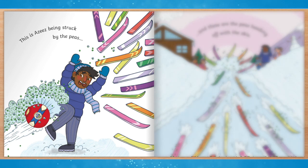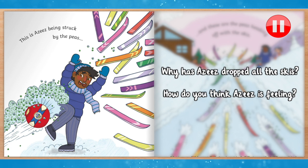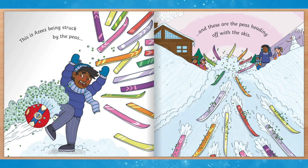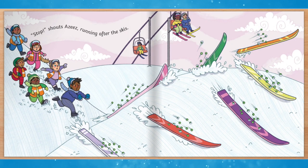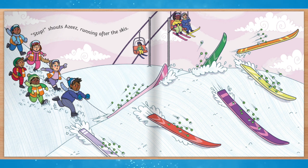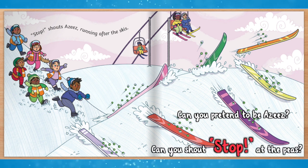This is Aziz being struck by the peas. Why has Aziz dropped all the skis? How do you think Aziz is feeling? How do you think the peas will go next? Stop! Shouts Aziz running after the skis. Can you pretend to be Aziz and shout stop at the peas?